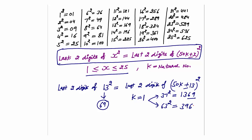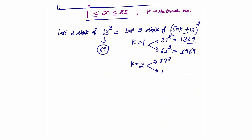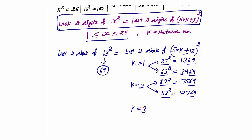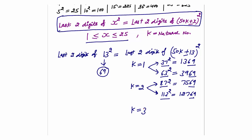And 63² = 3969 — again, last two digits are 69. With k=2, we get 100+13=113 and 100−13=87. So 87 squared and 113 squared also end in 69. After 13 squared, the sequence is: 37, 63, 87, 113 — and you can carry forward putting k=3 to find further perfect squares whose last two digits are 69.